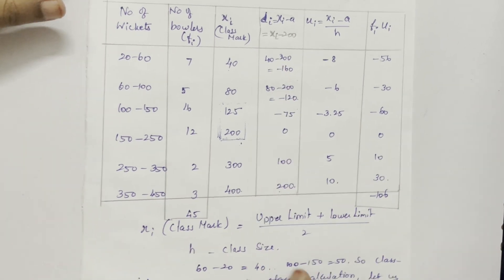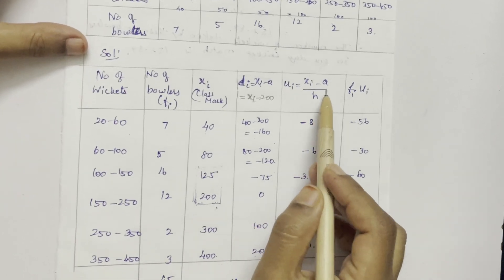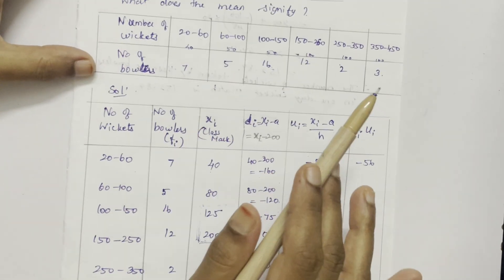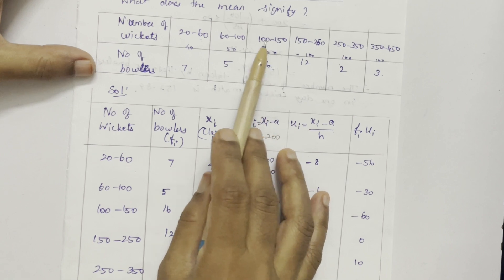And then UI. What is UI? UI is XI minus A by H. How to take H? Here, H is the difference between the intervals.